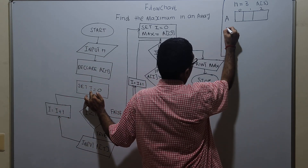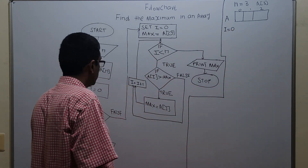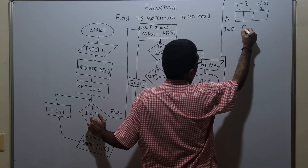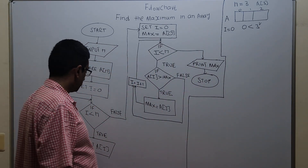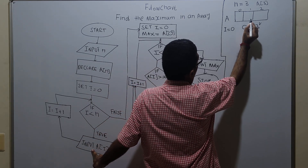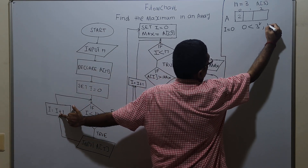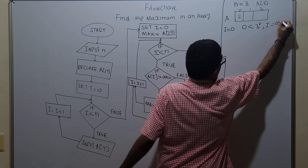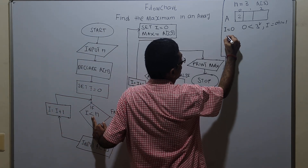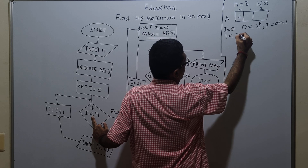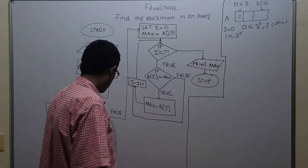Set i equal to 0. I check if i less than n — that means 0 less than 3, which is true. So input a of 0: I am giving the value 2. Incrementing i by 1: i becomes 0 plus 1 which equals 1. Now compare i less than n: 1 less than 3, which is true. Input a of 1: I am assigning the value 3.